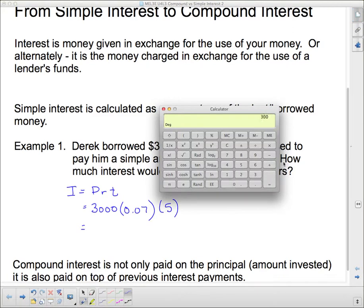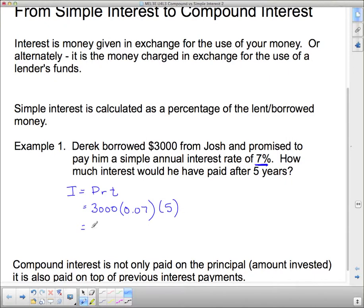3,000 times .07 times 5. And if he would get... I'm going to double check that one... 3,000 times .07 is $210. So you get that in one year. And then times 5 years... Yep, it was $1050.